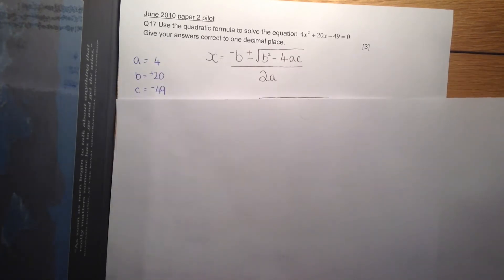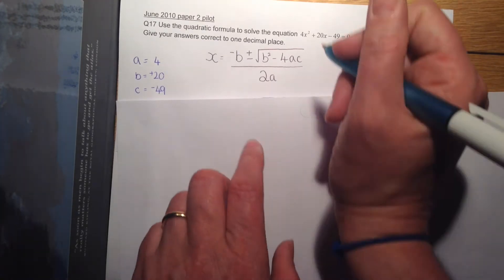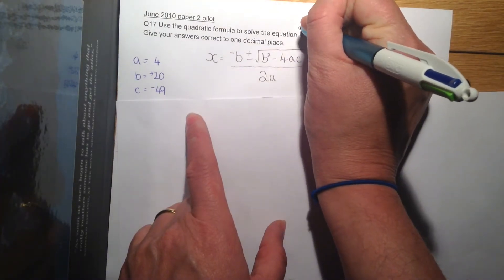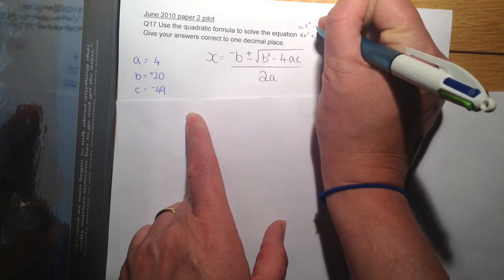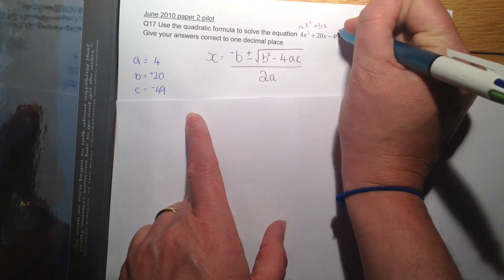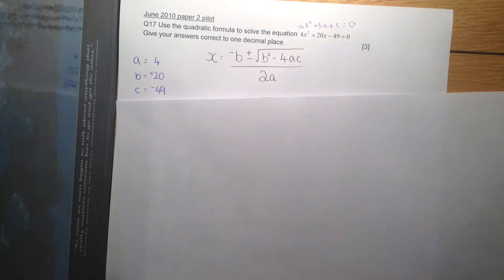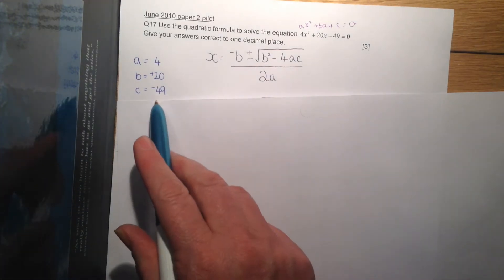So the first thing you need to do is write the formula out, and then work out the values for A, B, and C, making sure you consider the signs.